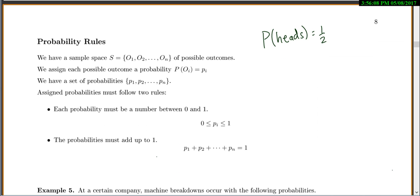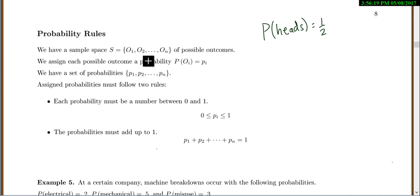We do have a few rules. We have our sample space S, and we'll call our outcomes O1, O2, etc. We can assign each possible outcome a probability. So we'll say like the probability of our outcome equals some probability, or probability of heads equals 1/2. Our assigned probabilities have to follow two rules. Every probability has to be a number between 0 and 1, and your probabilities must add up to 1.